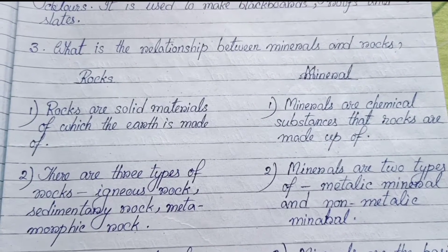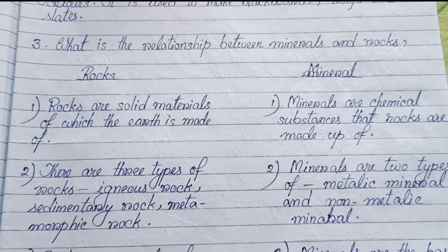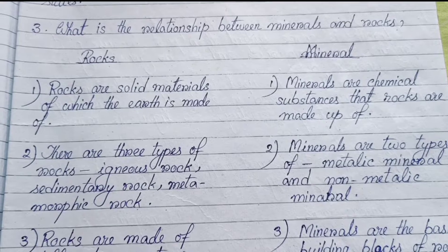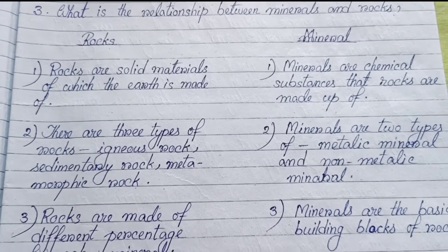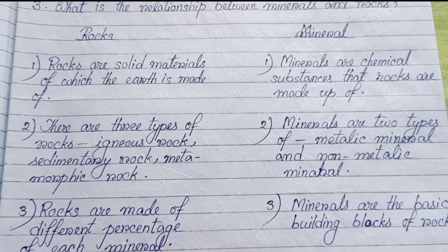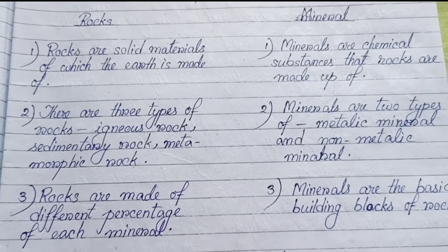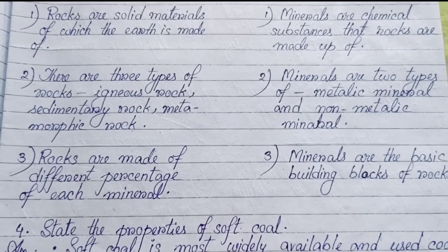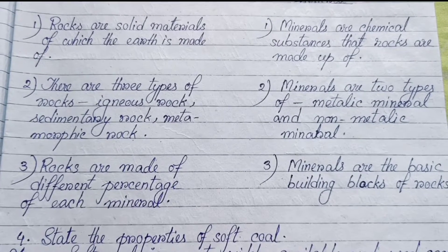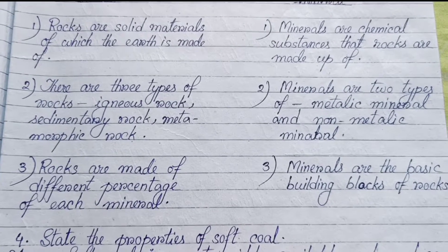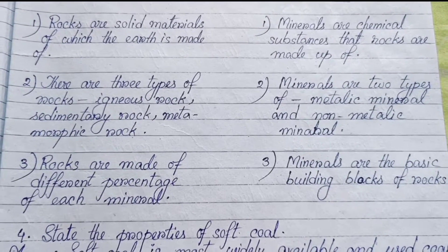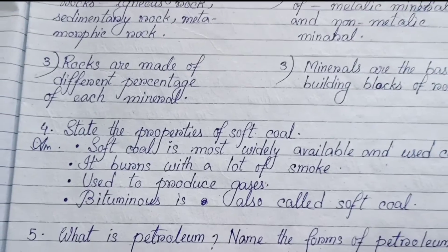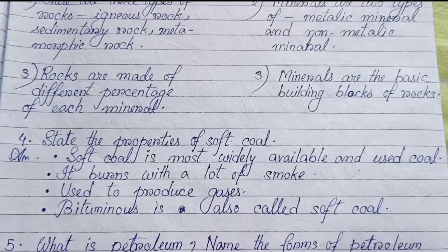Number three: What is the relationship between minerals and rocks? Rocks are solid materials of which the earth is made. Minerals are chemical substances that rocks are made up of. There are three types of rocks: Igneous, Sedimentary, and Metamorphic. Minerals are of two types: Metallic and Non-metallic. Rocks are made up of different percentages of each mineral. Minerals are the basic building blocks of rocks.